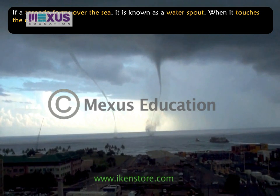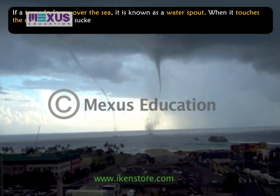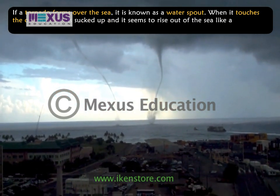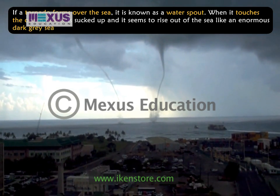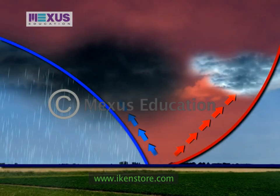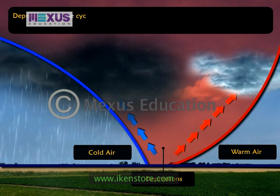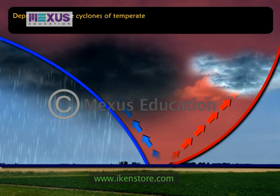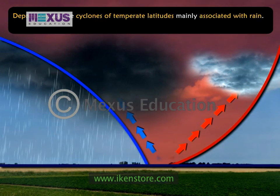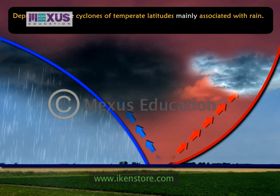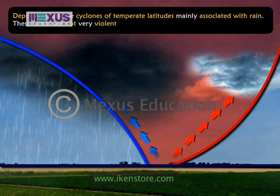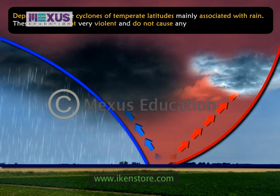When a waterspout touches the ocean, water is sucked up and it seems to rise out of the sea like an enormous dark grey sea serpent. Depressions are the cyclones of temperate latitudes, mainly associated with rain and usually occur in Europe. These winds are not very violent and do not cause any damage.